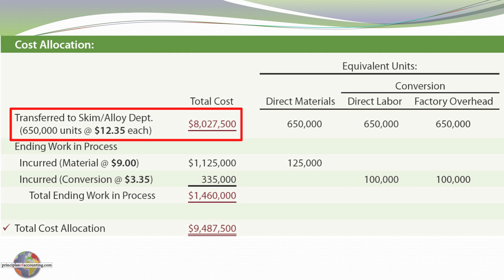We had 650,000 units deemed to be complete in the melting department during the month, and we had calculated a cost per equivalent unit of $12.35. This looks fairly complicated but really it's not — 650,000 units at an average cost of $12.35. We're going to assign out $8,027,500 in cost. That $8 million we're transferring into the next department.